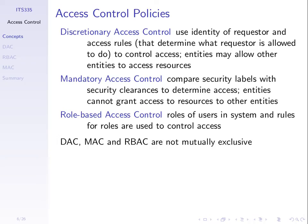Role-based access control is similar to discretionary access control, except instead of controlling which individual users can access resources, we do it based on user roles. For example, all faculty members have a certain role, and we specify controls per role. A user may take one or more roles — a head of school has different access permissions than a regular faculty member. A computer system may combine these three different approaches.